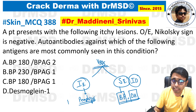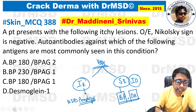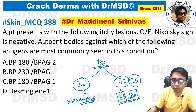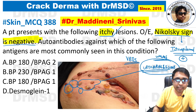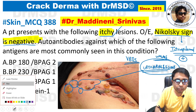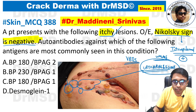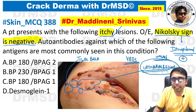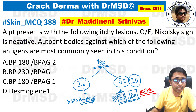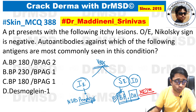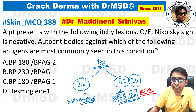So this has to be either bullous pemphigoid or dermatitis herpetiformis. Because in pemphigus vulgaris, which is an intra-epidermal blistering disorder, Nikolsky's sign is going to be positive. Whereas in sub-epidermal blistering disorders, Nikolsky's sign is going to be negative. What is the other clue? If you observe carefully, you are able to see bullae — tense bullae and vesicles are seen. Among these two conditions, bullous pemphigoid is going to have tense bullous lesions present over the body.